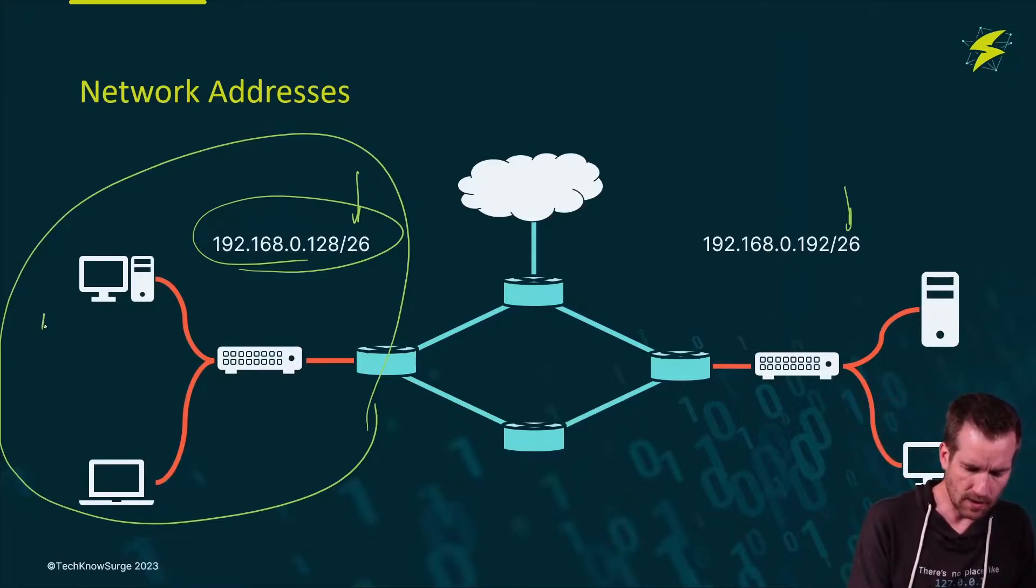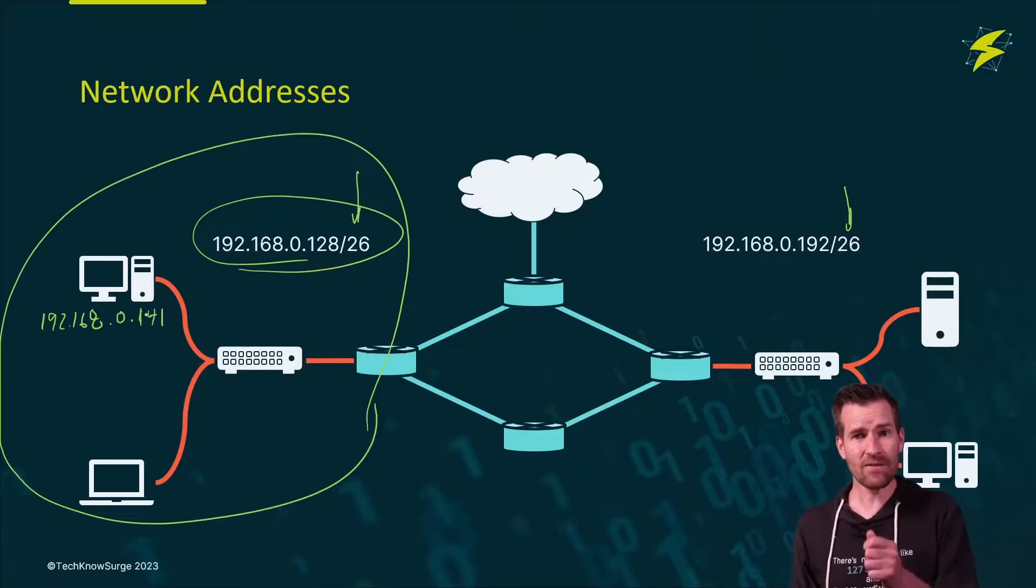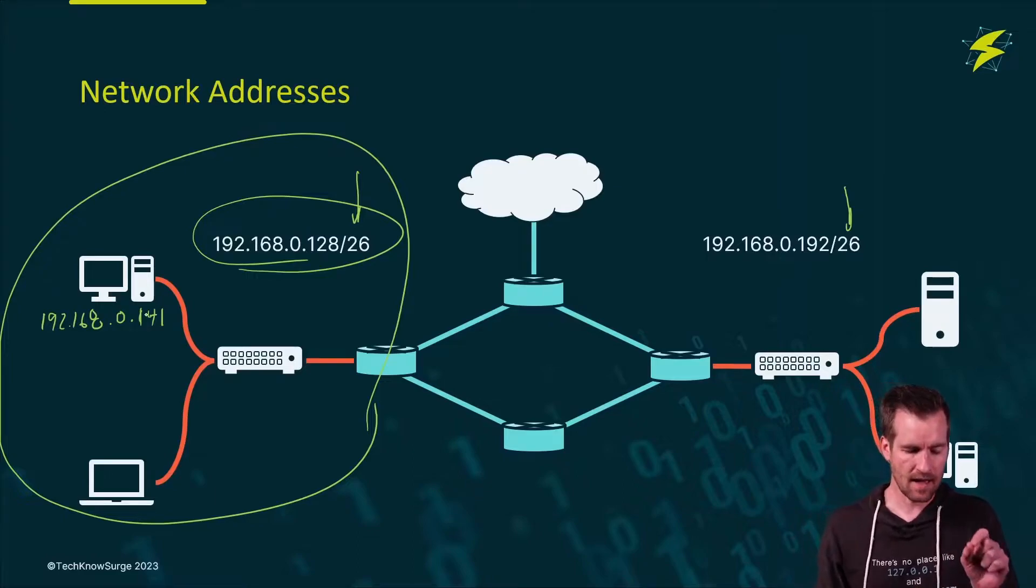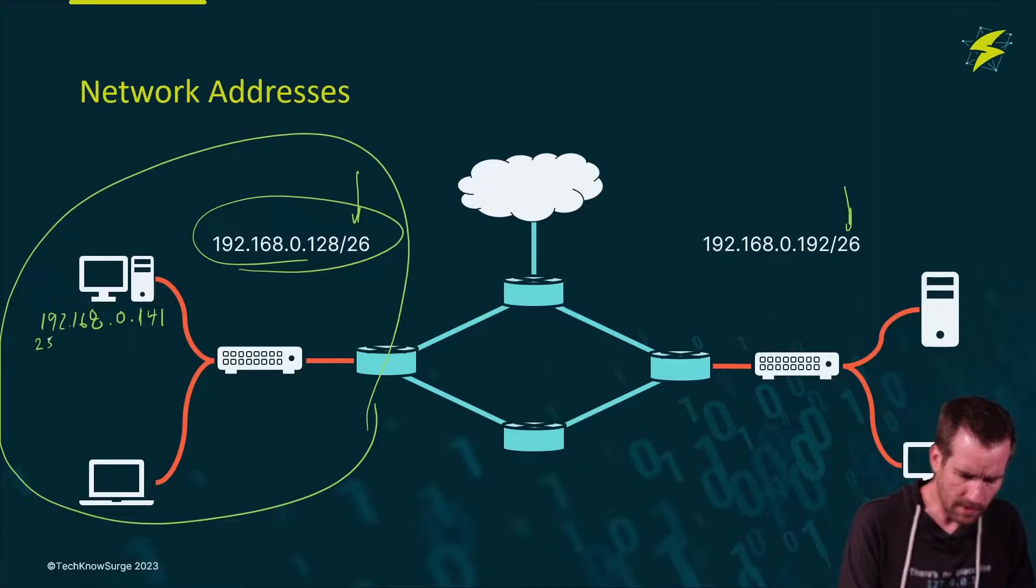Your computer is assigned some sort of IP address. Let's say it's 192.168.0.141. That's a piece of information that it has. You've either set it up or a lot of times your networks are set up with DHCP and it receives this IP address from a server.